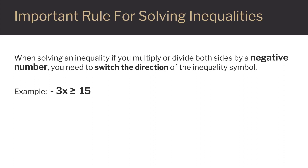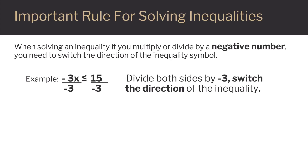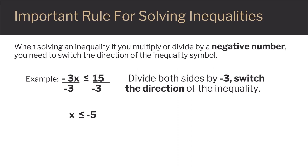There is one important difference between solving inequalities and solving equations. When solving an inequality, if you multiply or divide by a negative number, you need to switch the direction of the inequality symbol. Here's an example: we'll solve negative 3x is greater than or equal to 15. We need to isolate x, so we'll divide both sides by negative 3. When we do that, we also change the direction of the inequality. The negative 3s cancel on the left. On the right, 15 divided by negative 3 is negative 5. So the result is x is less than or equal to negative 5.